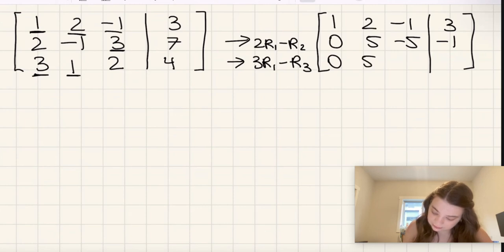Then negative 1 times 3 is negative 3, minus another 2 is negative 5. And then 3 times 3 is 9, minus 4 is 5.